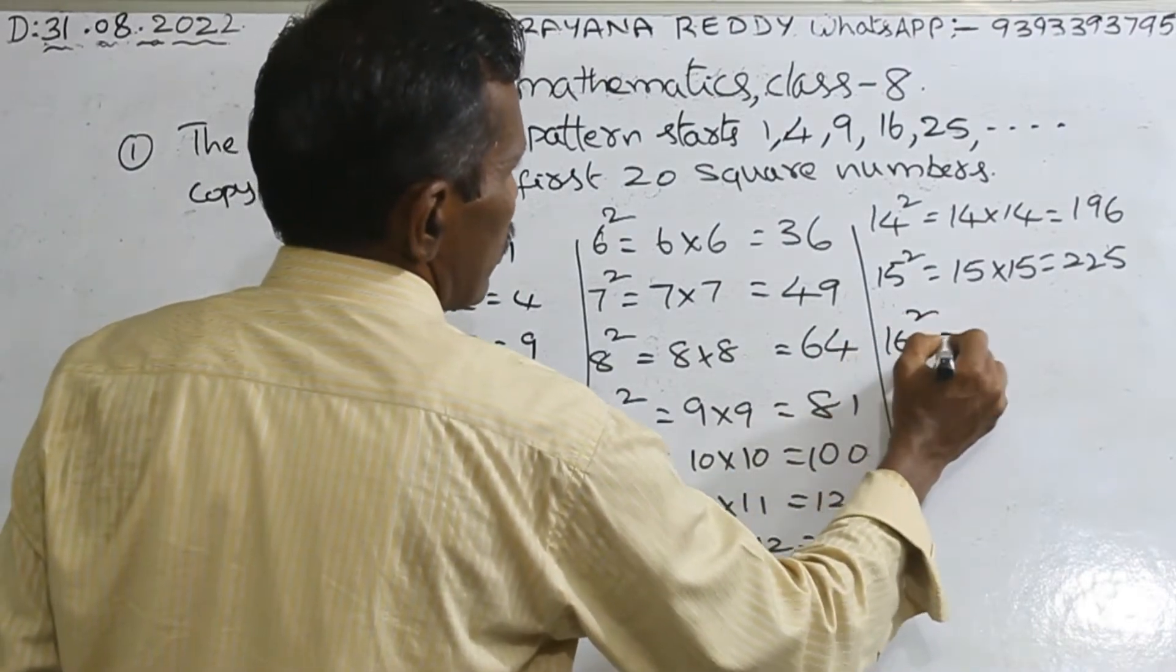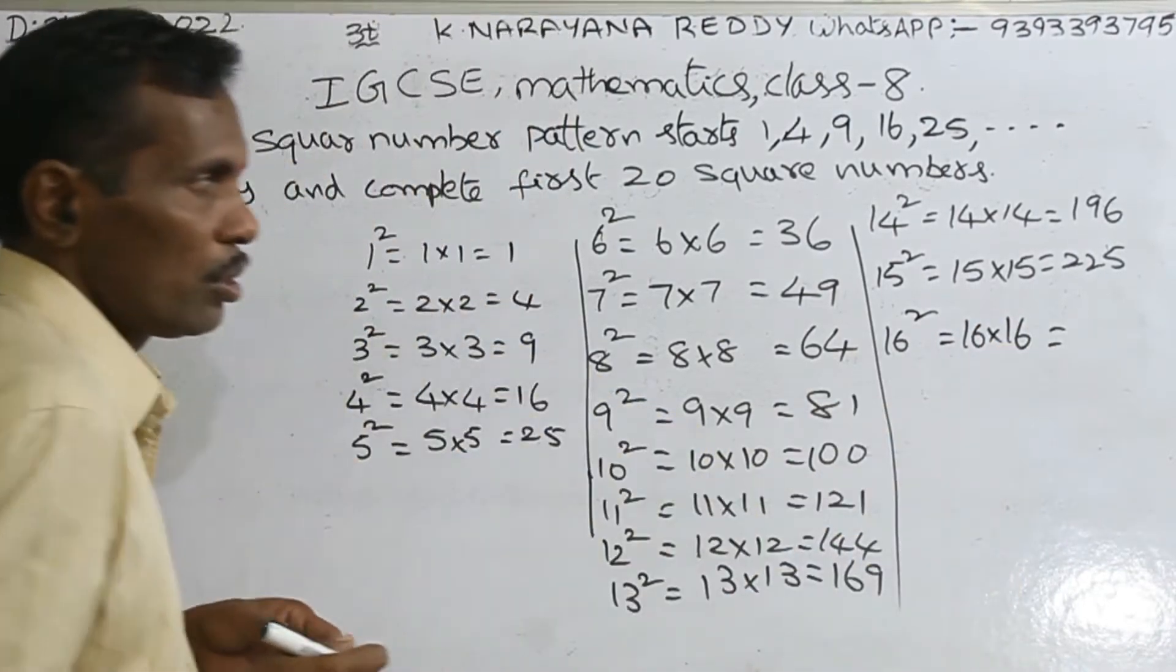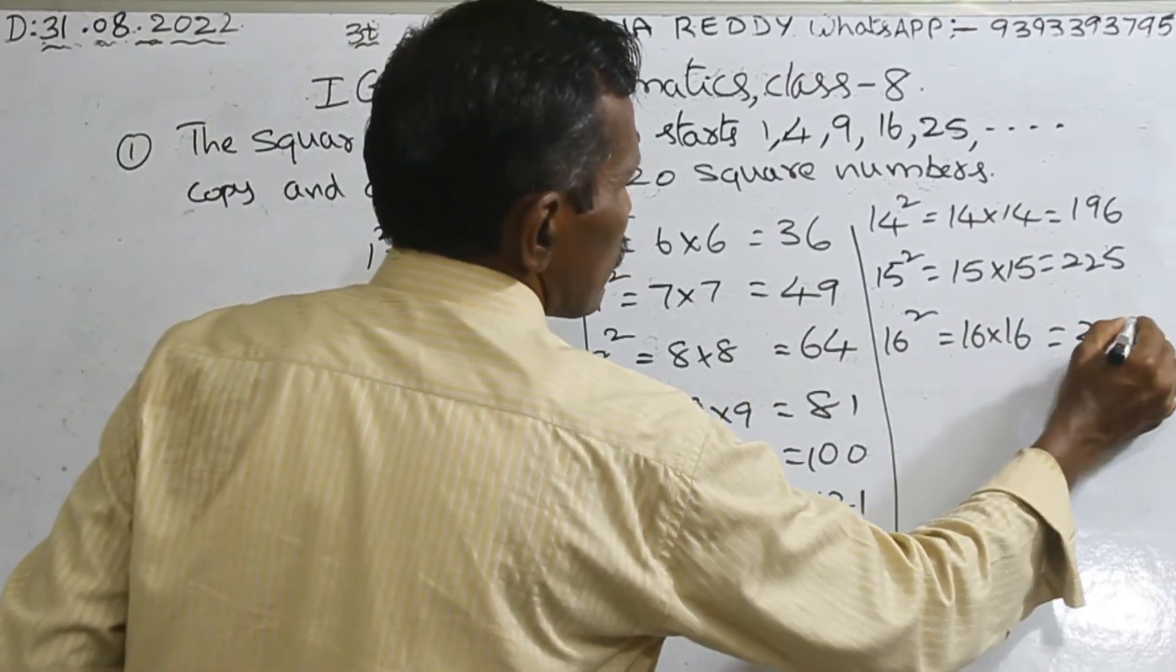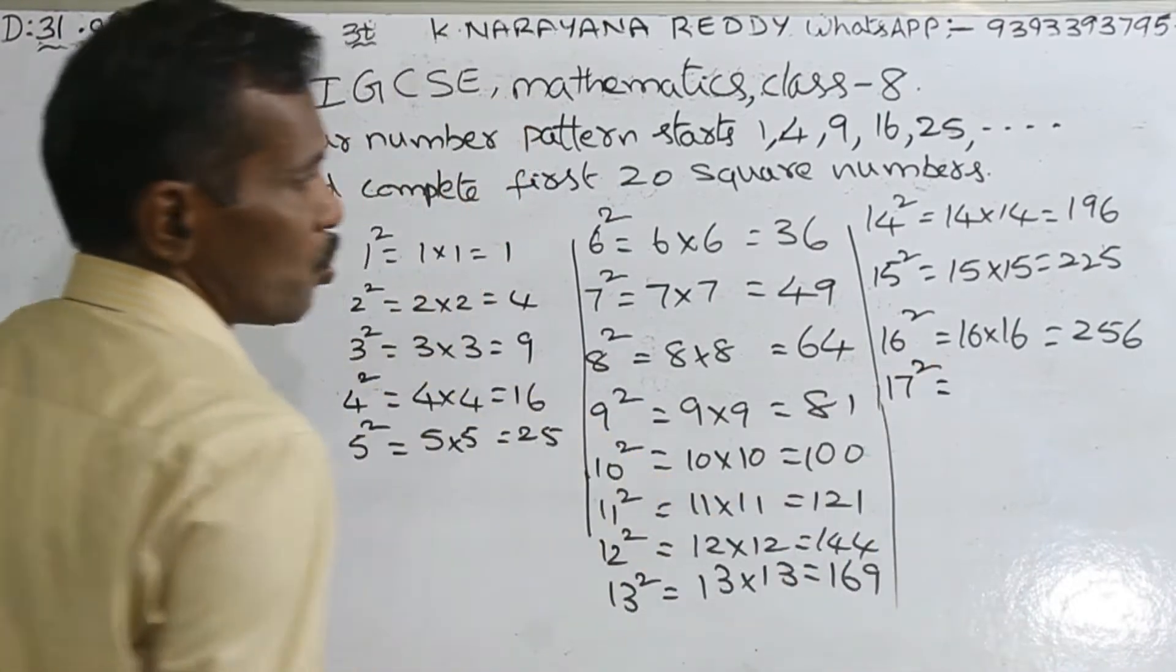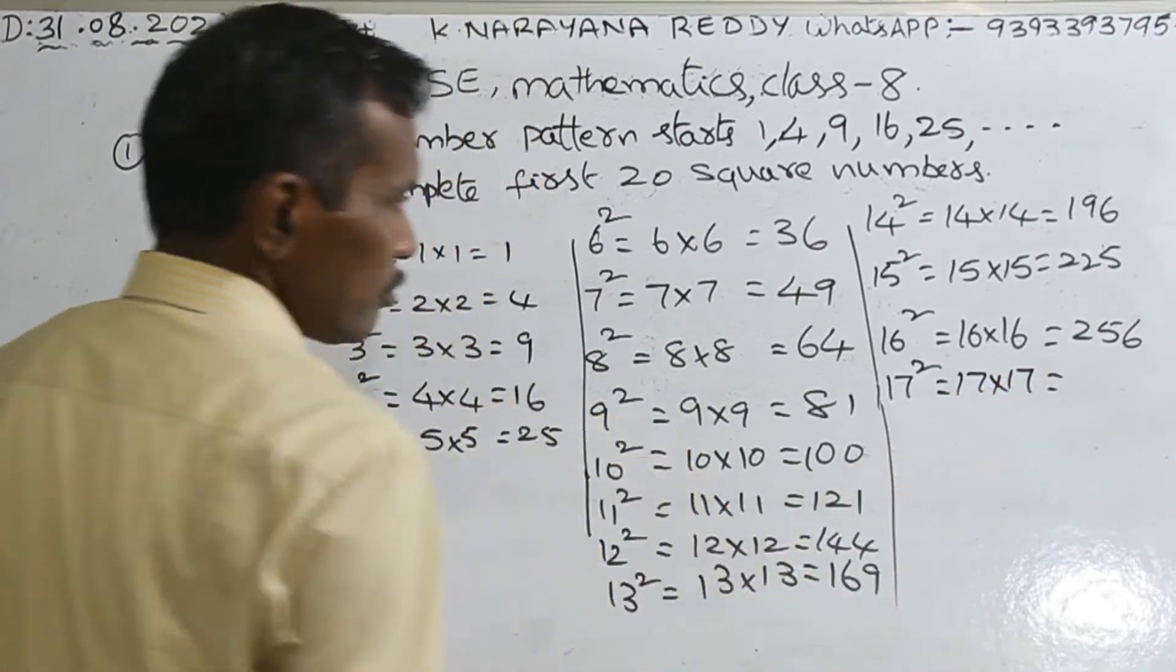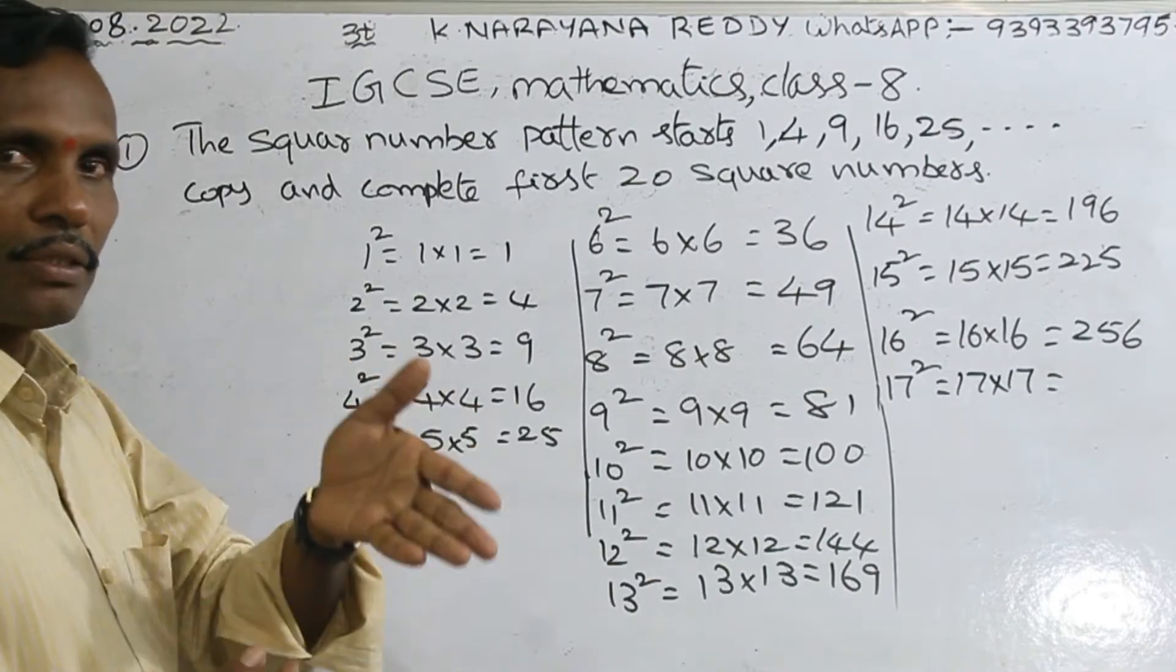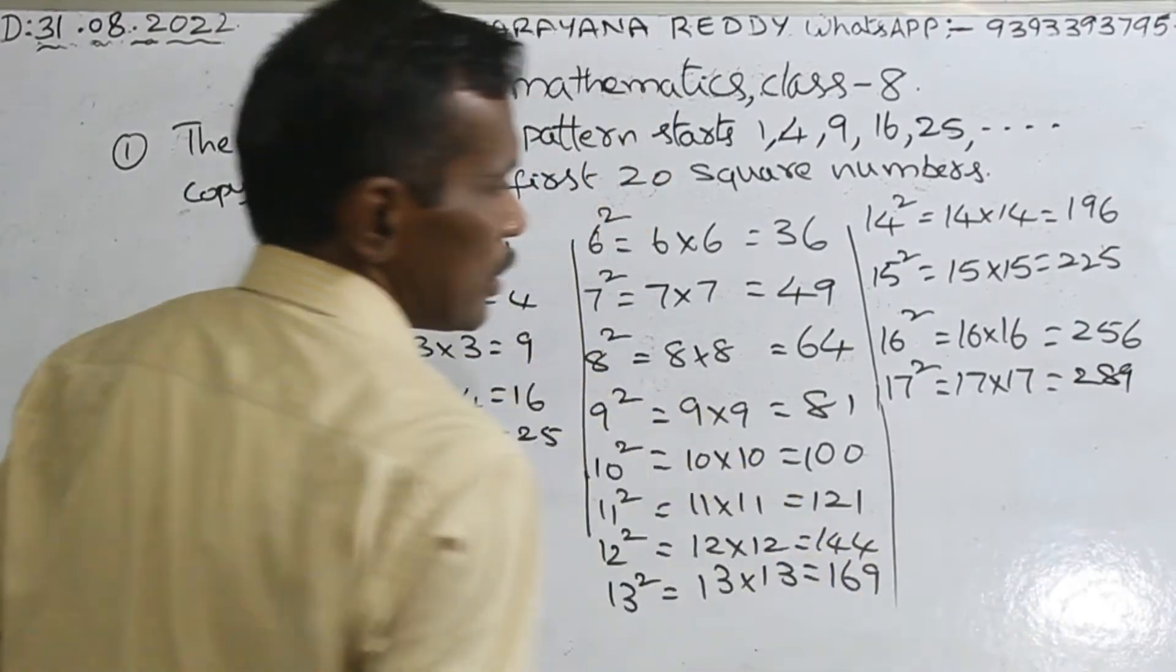16 square: 16 into 16. Here also, 16 threes are 160, 16 sixes are 96, means 256. 17 square: 17 into 17. 17 threes are 170, 17 sevens are 119, so 119 plus 170 equals 289.